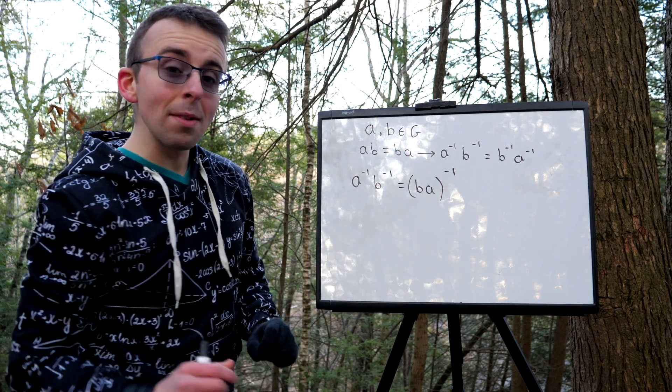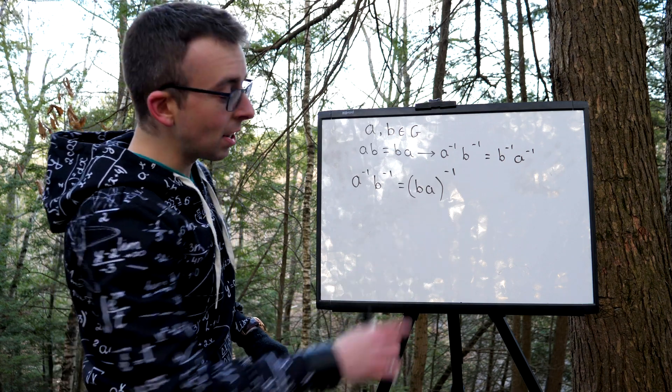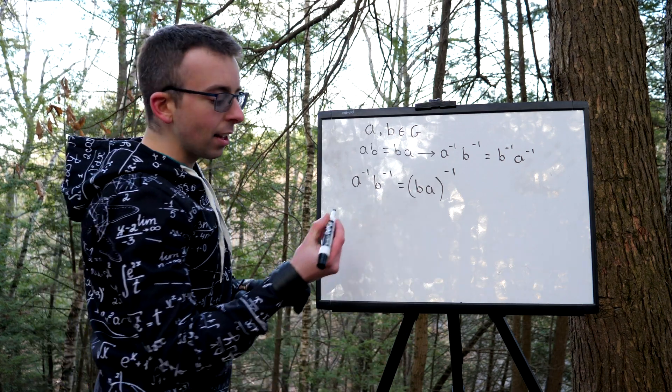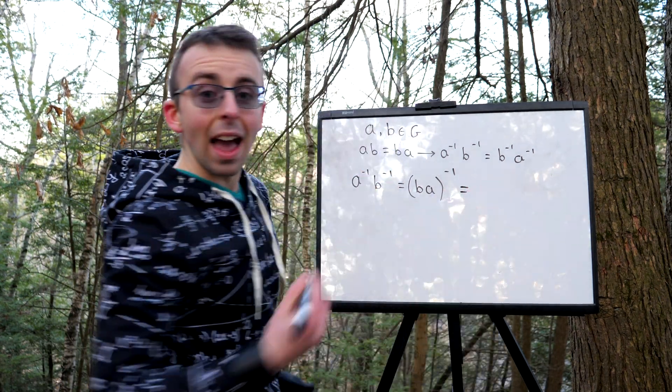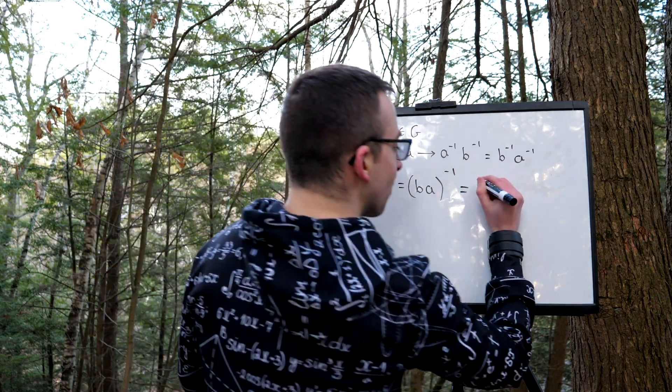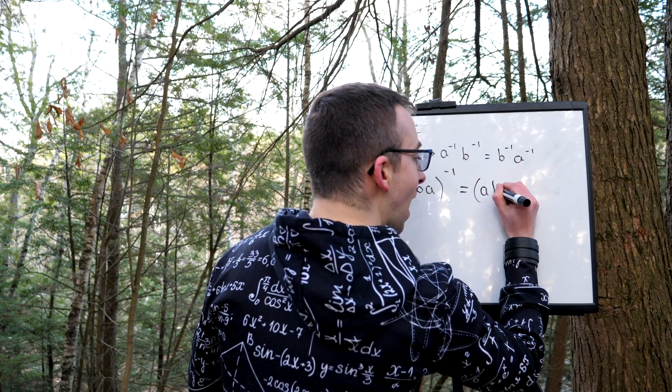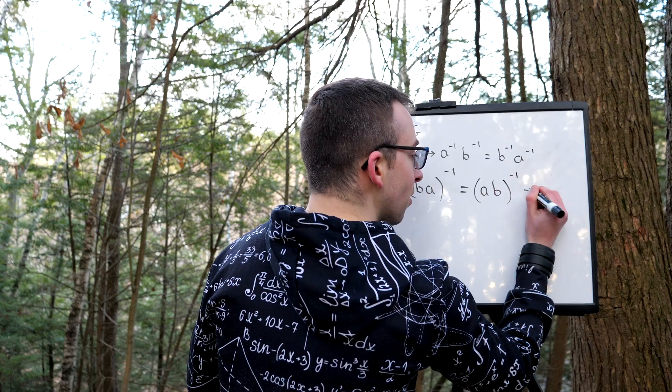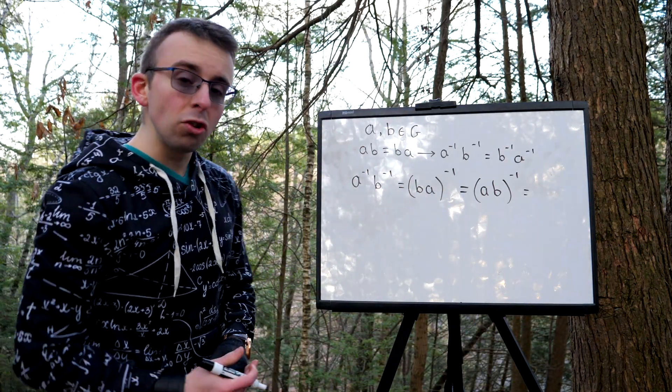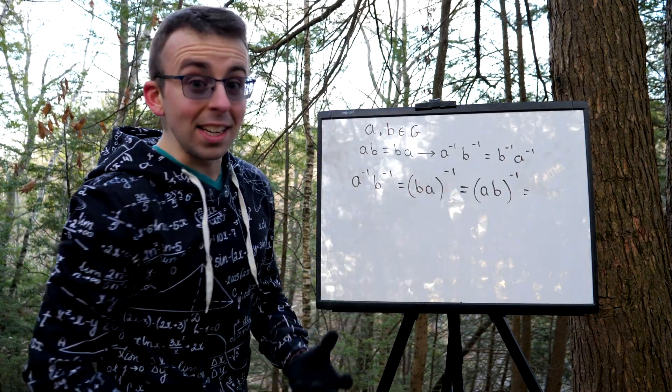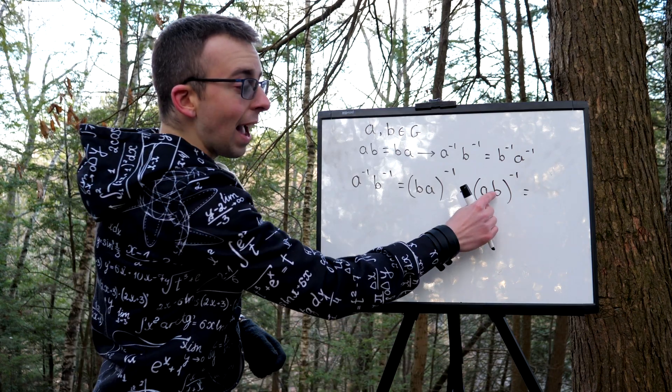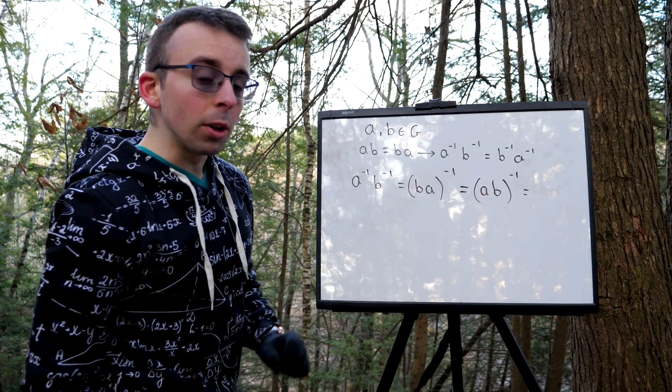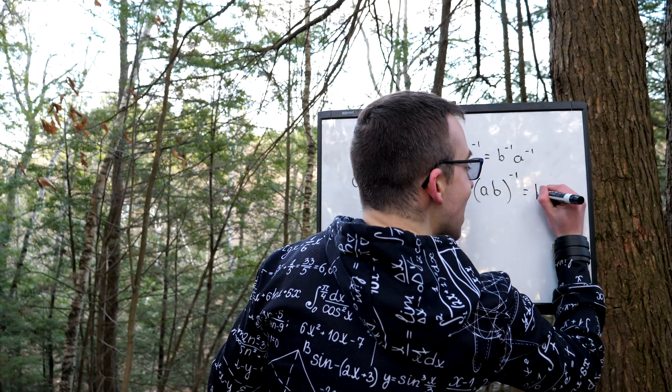However, we know that b and a commute. So here where we have ba, we can replace that with ab. So ba inverse is equal to ab inverse. But then again, applying the socks and shoes property, but moving in a different direction, we know that ab inverse is equal to b inverse a inverse.